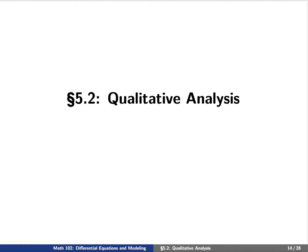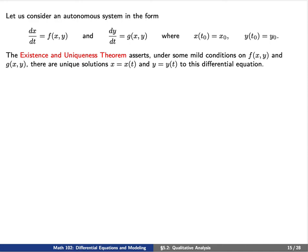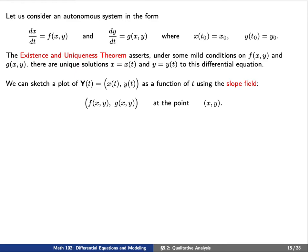Let's consider an autonomous system of the form dx/dt equals f of x,y and dy/dt equals g of x,y, and make this an initial value problem by saying x at t0 equals x0 and y at t0 equals y0. The existence and uniqueness theorem asserts, under some mild conditions on f and g, that there are unique solutions x(t) and y(t) to this IVP. We can sketch out the solution using the slope field — at every point x,y we place an arrow f(x,y), g(x,y) that tells us the direction we're moving.